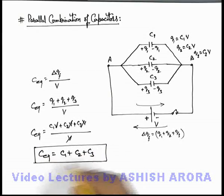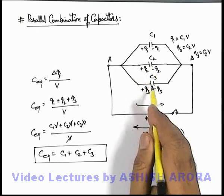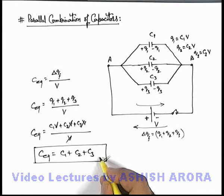So always remember, whenever some capacitors are connected in parallel, the equivalent capacitance will be given by the sum of all individual capacitances of the capacitors.